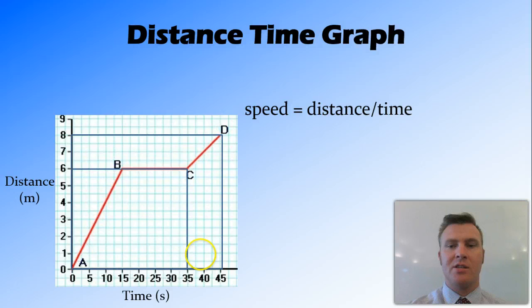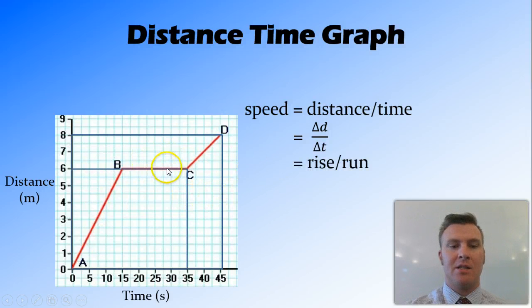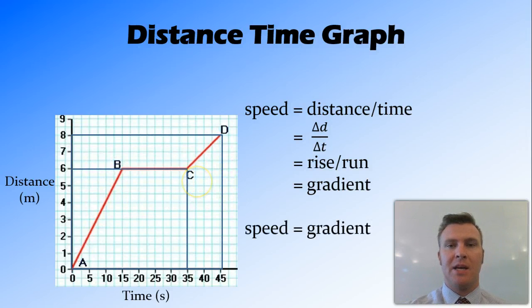And what you may have noticed there, when we were looking through it, looking at the change in distance divided by the change in time is the same as looking at the rise divided by the run, which is something you might have seen in maths, and it's called the gradient. So the speed is equal to the gradient of the line in a distance time graph.